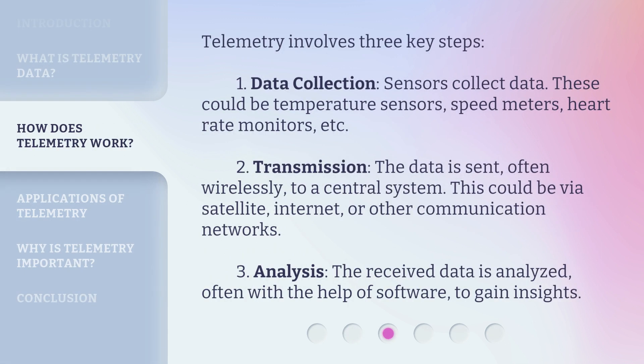Telemetry involves three key steps. One: data collection — sensors collect data; these could be temperature sensors, speed meters, heart rate monitors, etc. Two: transmission — the data is sent, often wirelessly, to a central system, via satellite, internet, or other communication networks. Three: analysis — the received data is analyzed, often with the help of software, to gain insights.